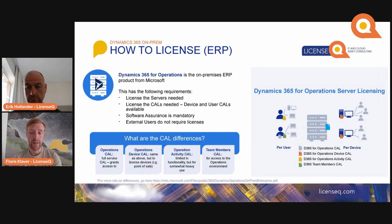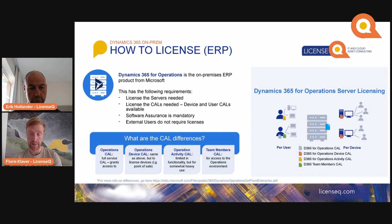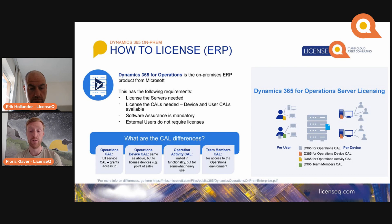ERP is licensed a bit differently because here you do have server licenses. If you license ERP on-premise, you need to license the servers that need to have the application running, and you need to license the client access licenses — both device and user CALs are available. Software Assurance is mandatory for ERP, and here as well, external users don't require licenses.